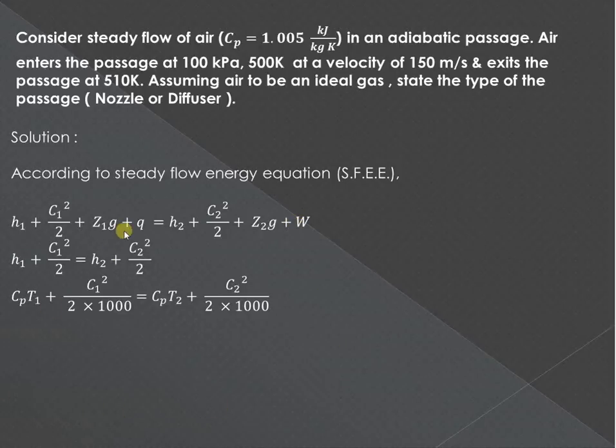As it is an adiabatic passage, there is no heat that is supplied from system to the surrounding or from surrounding to the system. There is no work done during the process, so these values we can assume zero. We can assume that there is no datum head that is also present, or rather they are same, so we can cancel out.